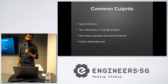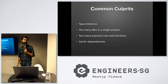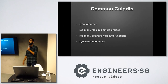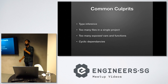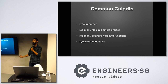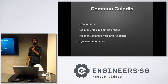The last culprit was cyclic dependencies: class A depends on class B, class B on C, and C back on A. In this case, if you end up changing any one of those classes, Xcode will end up rebuilding all three of them again.